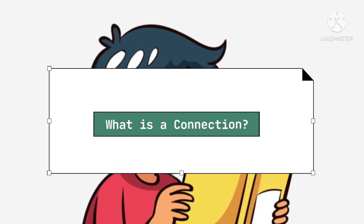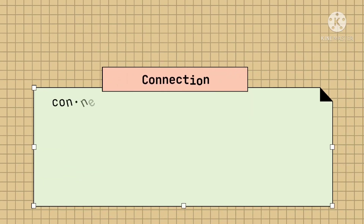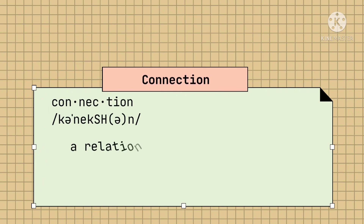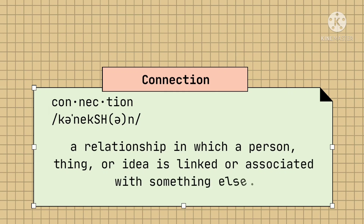So now, let's find out what is the meaning of connection. Connection is a relationship in which a person, thing, or idea is linked or associated with something else.